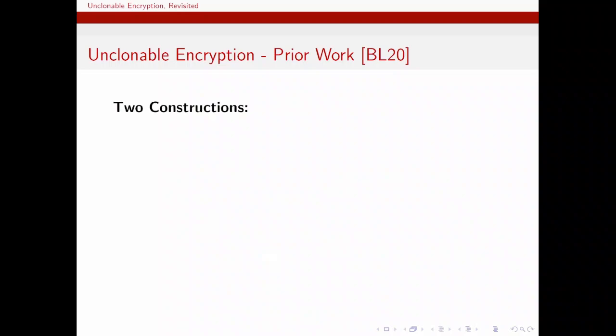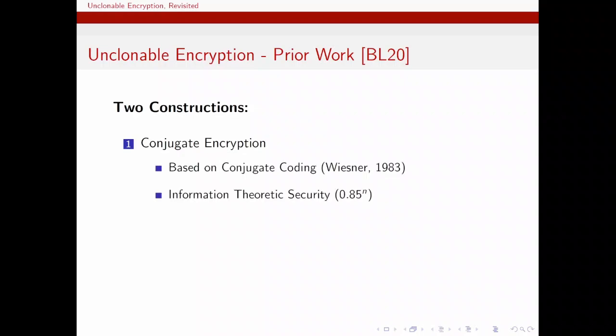In their introductory work, Broadbent and Lorde presented two constructions of unclonable encryption. The first one, which they call conjugate encryption, is based on the conjugate coding by Wiesner, which are the BB84 states used in Wiesner's quantum money construction as well as quantum key distribution. The security for this scheme is information theoretic, and it matches the value 0.85 to the n, which comes from a monogamy of entanglement bound.